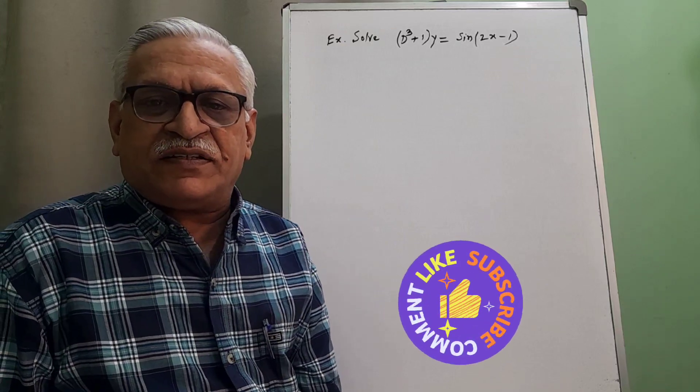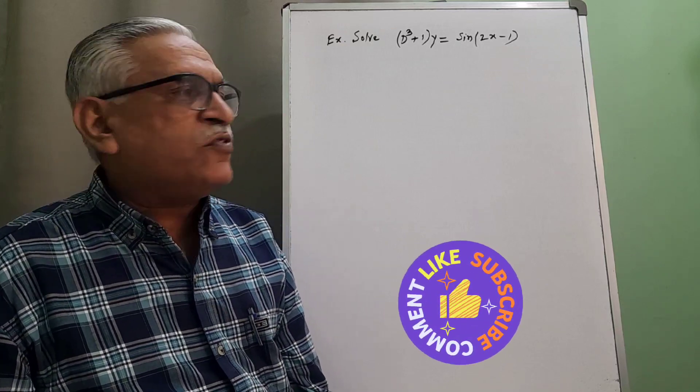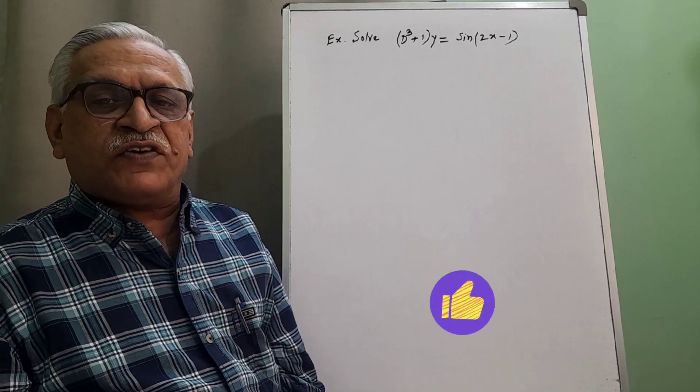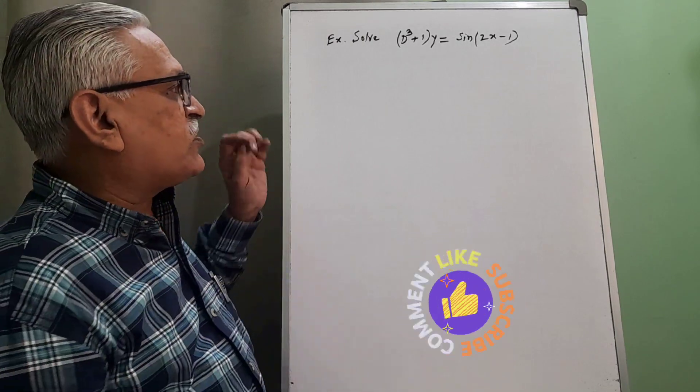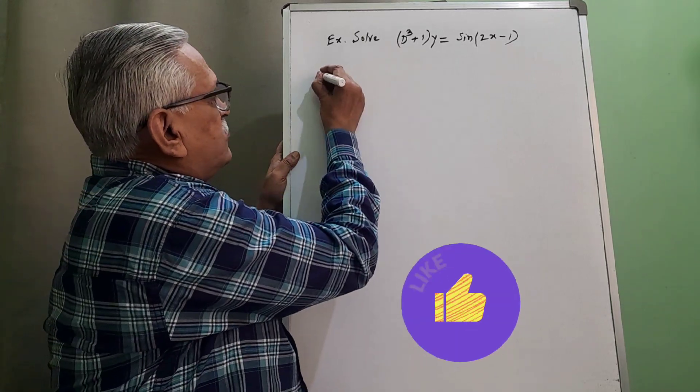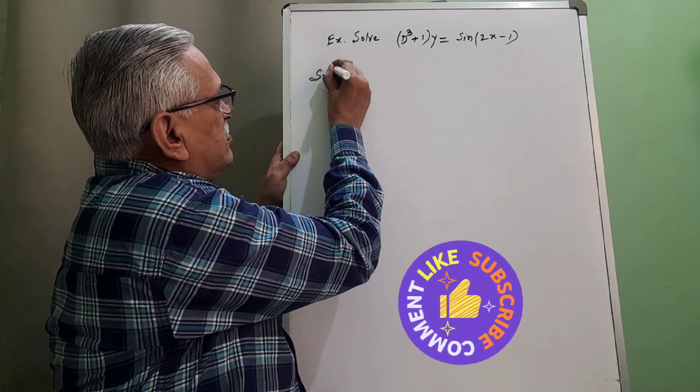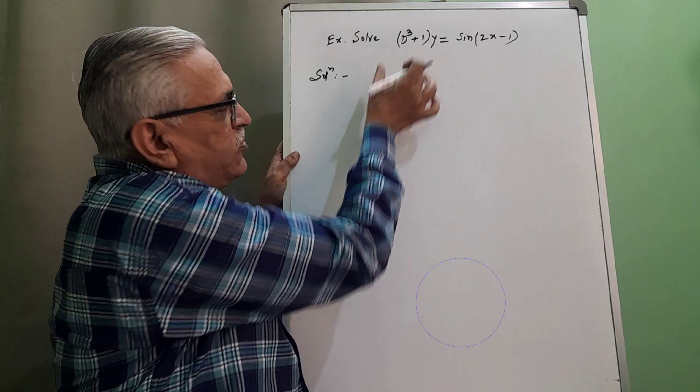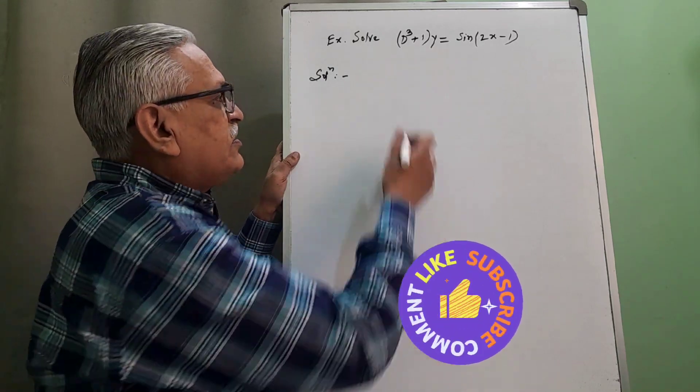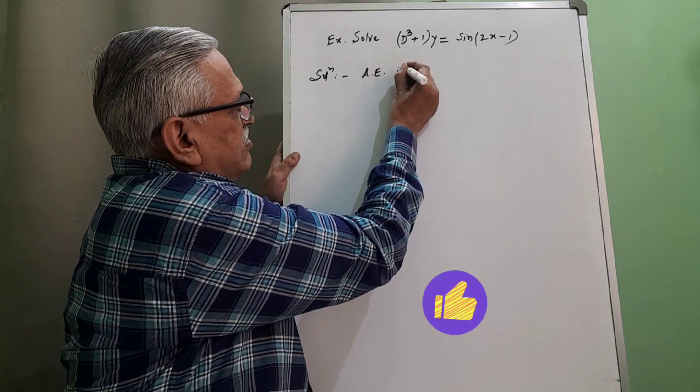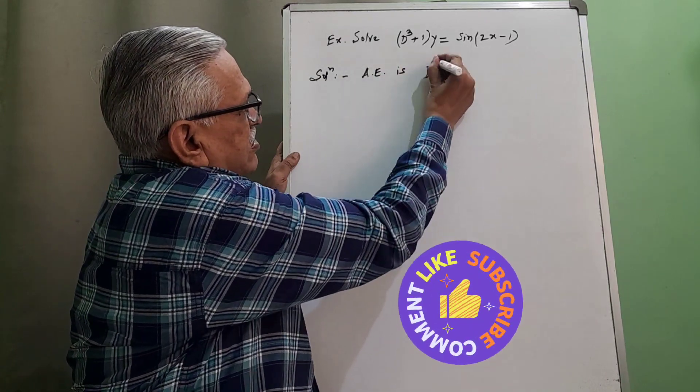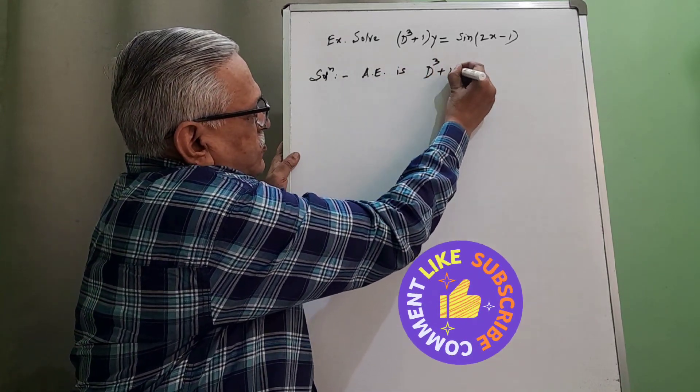Hello friends, myself Rajendra Mahazan presenting my video on linear differential equation case number 2 for PI. If we go by shortcut method to find its solution, we write down the auxiliary equation. Here the auxiliary equation is d cubed plus 1 equal to 0.